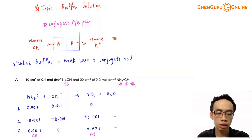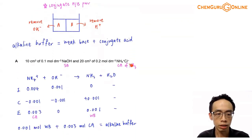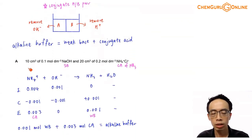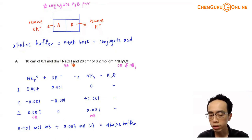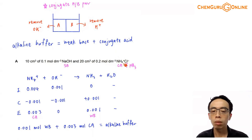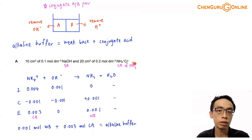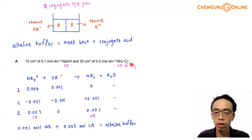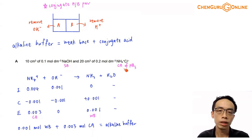Let's take a look at solution A: 10 cm³ of 0.1 mol per dm³ sodium hydroxide mixed with 20 cm³ of 0.2 mol per dm³ ammonium chloride. Sodium hydroxide is a strong base. Ammonium chloride — NH₄⁺ — is actually the conjugate acid of weak base ammonia.